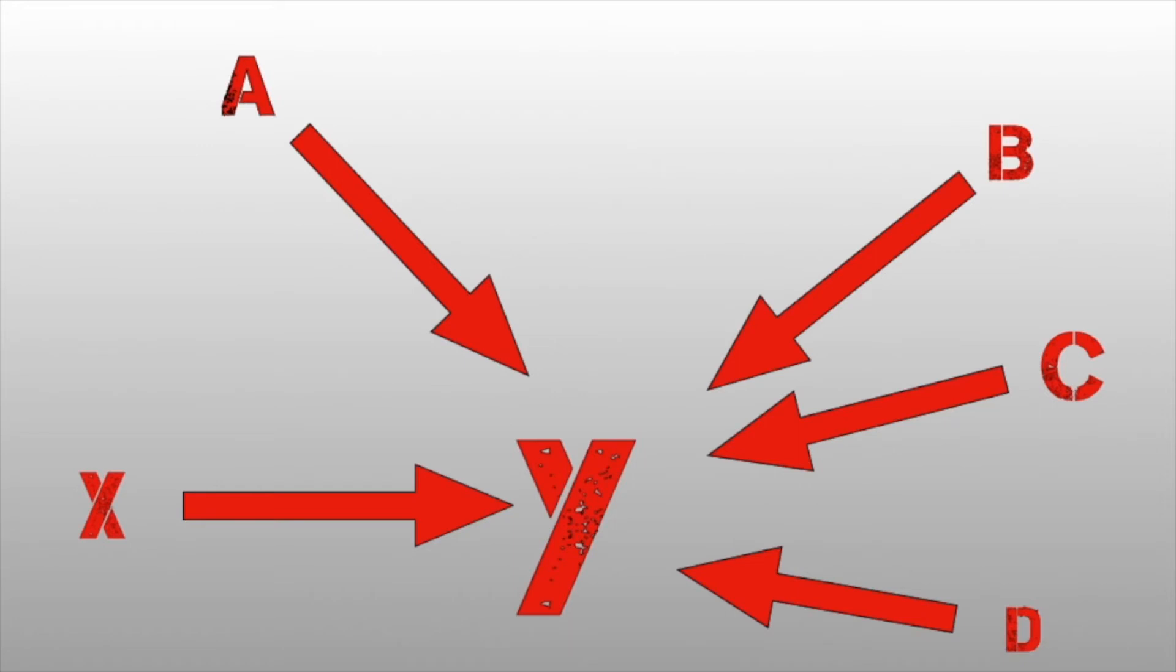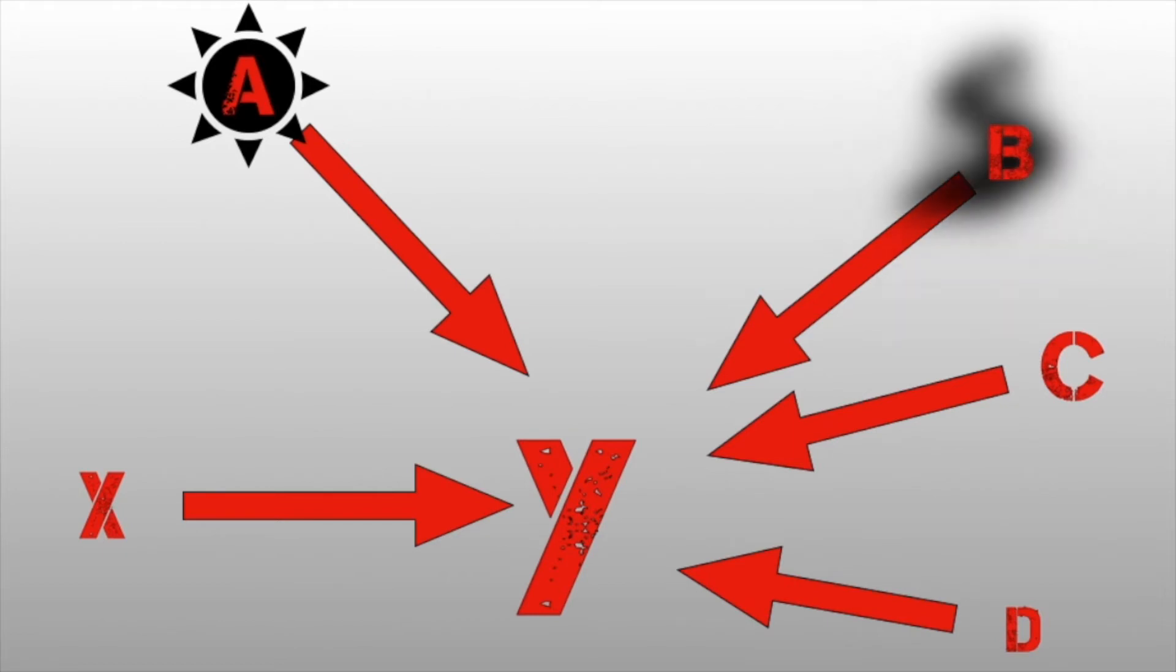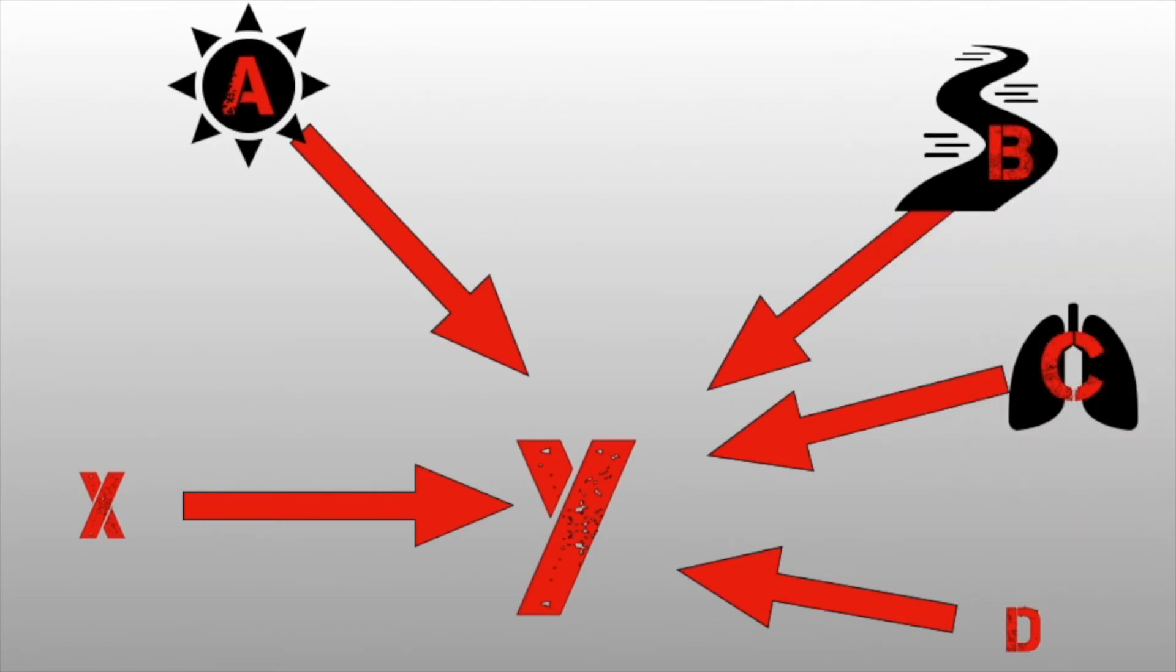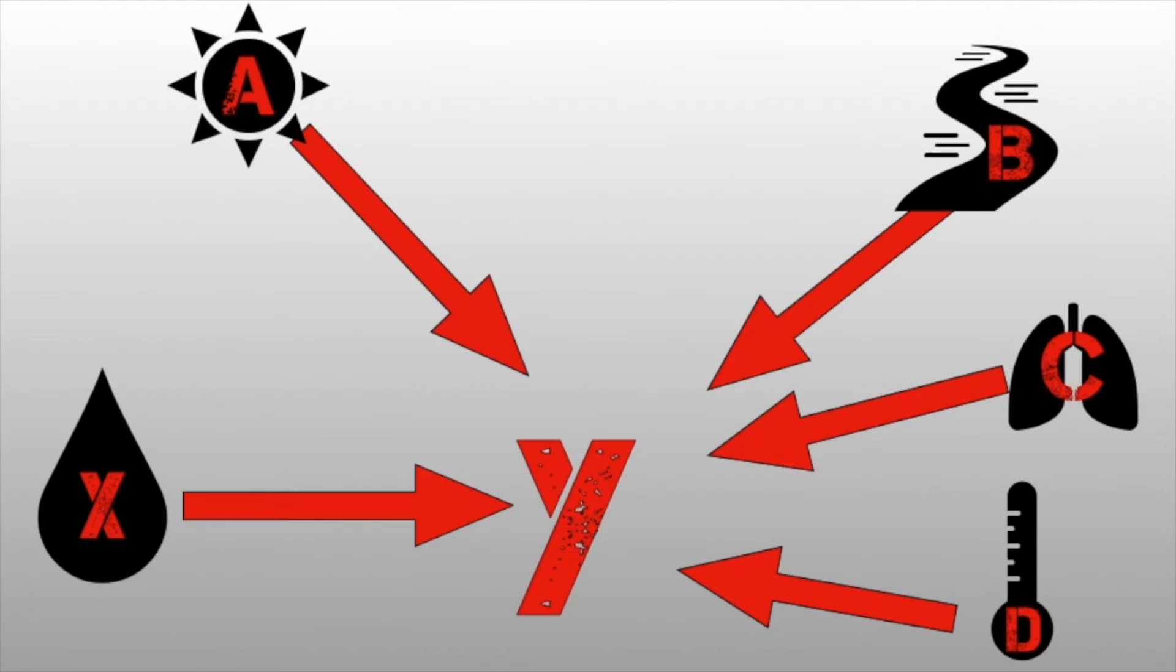These are all variables that can cause a change to y. If we are going to use our example of the fertilizer, something like light could affect the growth of a plant, or the amount of water, or the amount of carbon dioxide, or the temperature. Those are all things that could affect the growth of a plant, not just our chemical x.